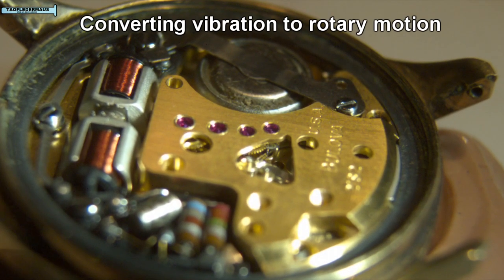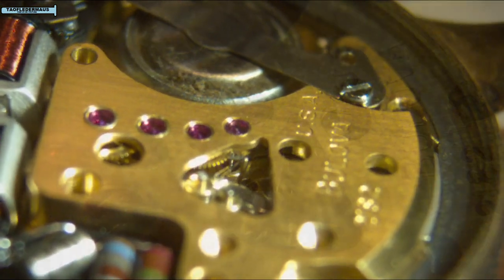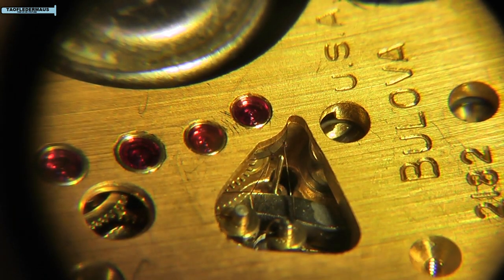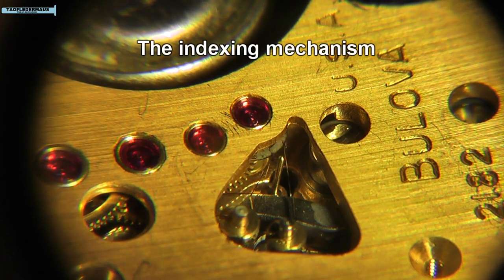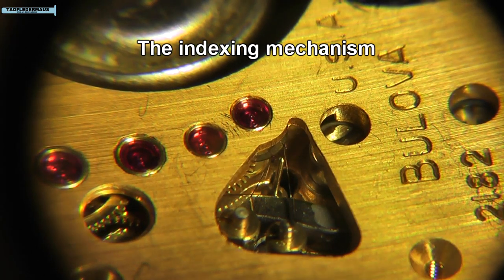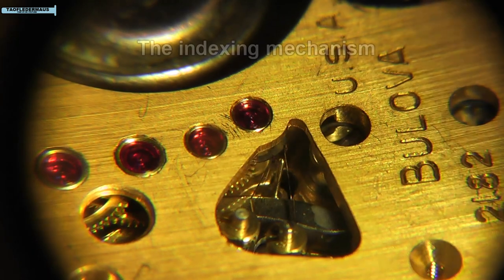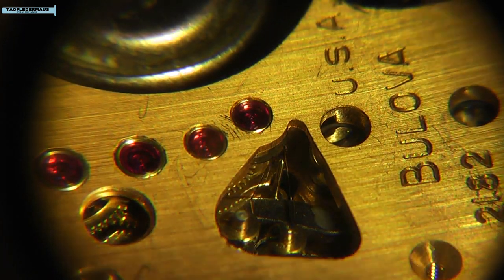The next big hurdle was how to convert that vibration into rotary motion. This was accomplished by something called the indexing mechanism. This is where things get very small, very fast, and very very precise.